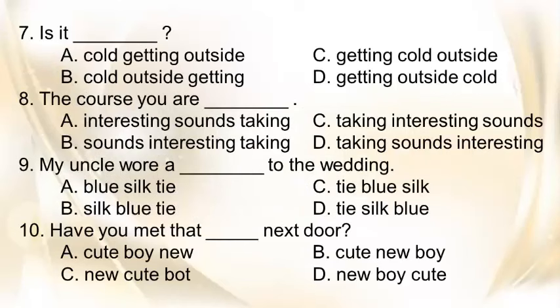7. Is it blank? A. cold getting outside, B. cold outside getting, C. getting cold outside, D. getting outside cold. 8. The course you are blank. A. interesting sounds taking, B. sounds interesting taking, C. taking interesting sounds, D. taking sounds interesting. 9. My uncle wore a blank to the wedding. A. blue silk tie, B. silk blue tie, C. tie blue silk, D. tie silk blue. 10. Have you met that blank next door? A. cute boy new, B. cute new boy, C. new cute boy, D. new boy cute.